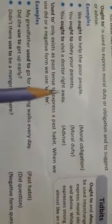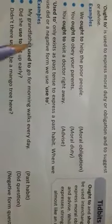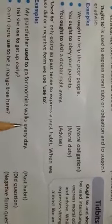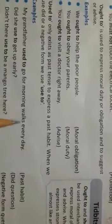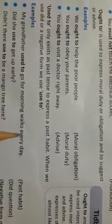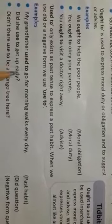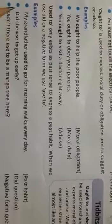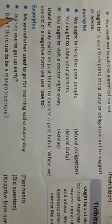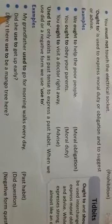Next is 'used to'. Used to is a past tense form. When we want to show a past habit, we use 'used to'. 'My grandfather used to go for morning walks every day' — it was his old habit to go for a walk every morning. In a question form: 'Did she use to get up early?' — here 'did' is added so we use the base form 'use to'.